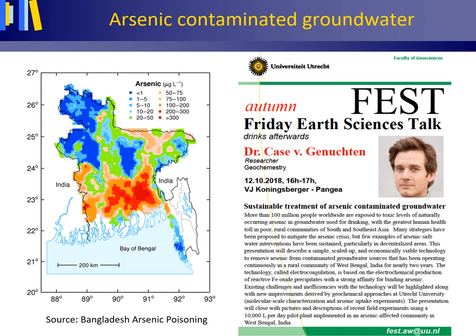Arsenic occurs as a coupled substitution in the pyrite structure. Toxic levels of naturally occurring arsenic in groundwater used for drinking water are a major threat to more than 100 million people worldwide, mainly in South and Southeast Asia, dramatically raising their risk for cancer and other serious diseases. High levels of arsenic can be found in drinking water from deep-drilled wells, which is particularly true for Bangladesh.